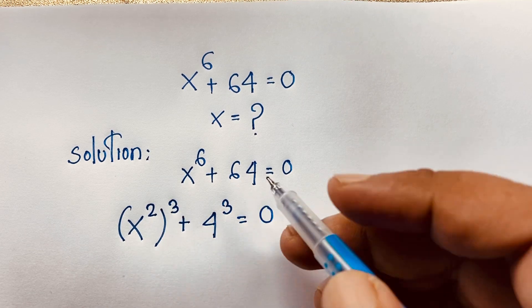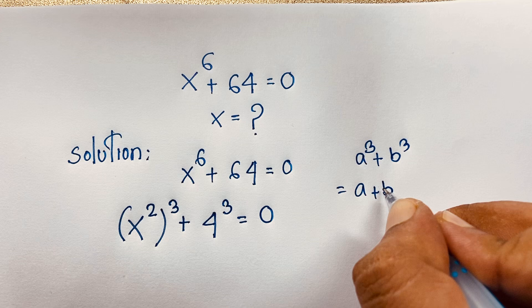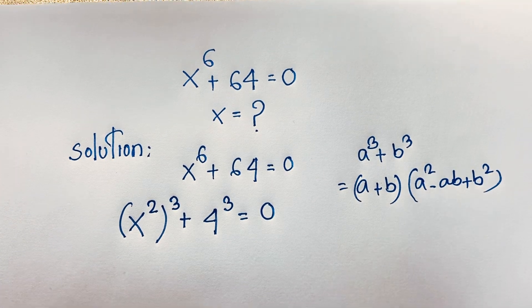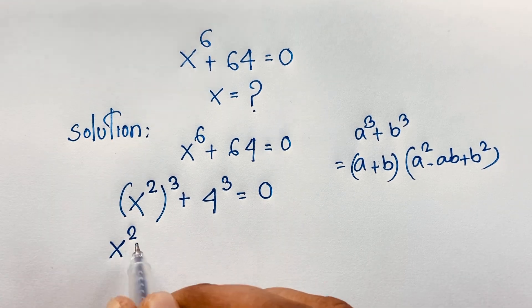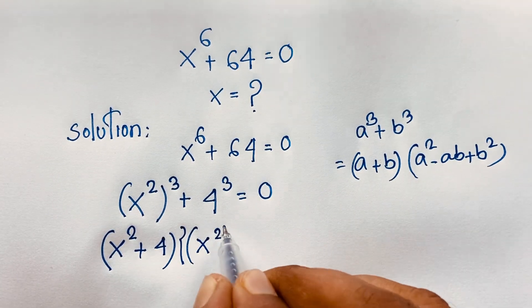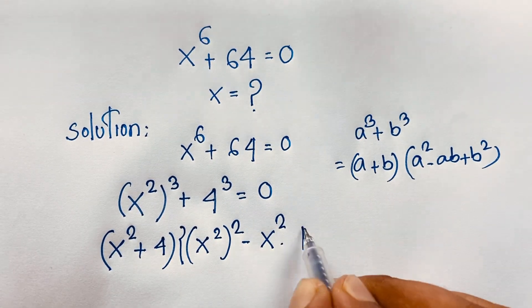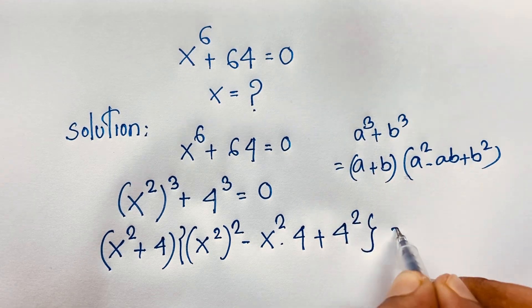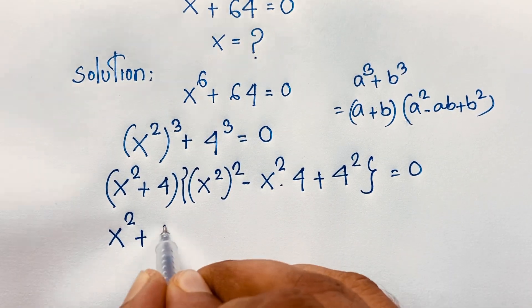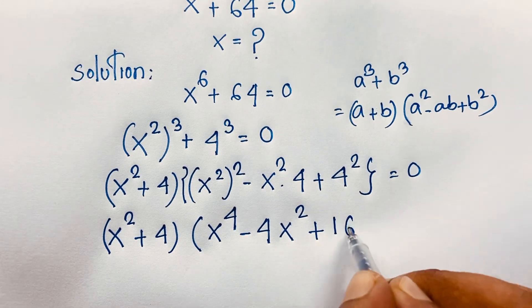I apply here the a cubed plus b cubed formula. That is, a cubed plus b cubed equals a plus b times a squared minus ab plus b squared. If I apply this math formula here, a is x squared and b is 4. So this expression gives us x squared plus 4, times x to the power 4 minus 4x squared plus 16, is equal to 0.